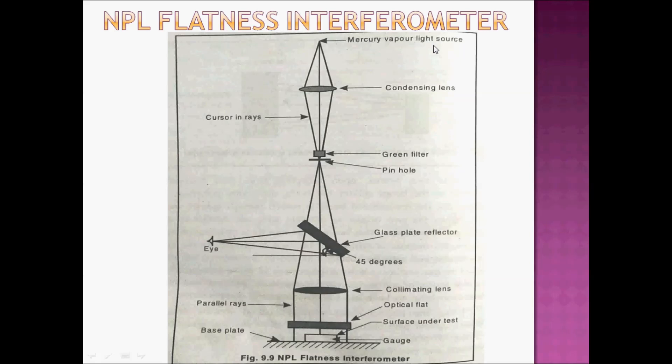The main parts: First, Mercury vapor light - monochromatic light source. This is the light source with front and scene lens, green filter. The light is monochromatic. The collimating lens is at the focal plane of the pinhole. The collimating lens produces parallel lines. The work piece has a base surface. There is a glass plate reflector reflected at 45 degrees.